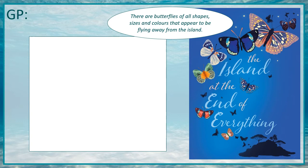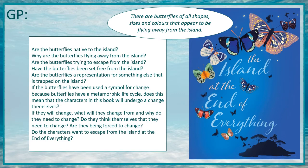So you should have a good list of questions now linked to these butterflies. Let's see what I came up with. Are the butterflies native to the island — do they live there, were they born there? Why are the butterflies flying away from the island? If this island is such a paradise, why would they leave? Going deeper: are they trying to escape from the island? Have the butterflies actually been set free — were they captured and left in cages, and has somebody come along and freed them? Deep question now: are the butterflies a representation for something else that's trapped on the island? Are they a metaphor? We love metaphors in reading — just as light represents hope, just as trees can represent life. The butterflies are representing life. And therefore, is this life actually trapped? Do they want to escape?